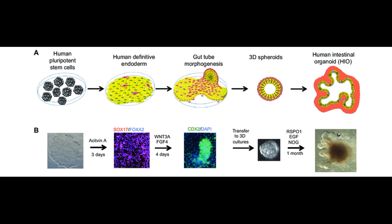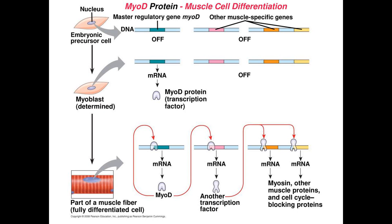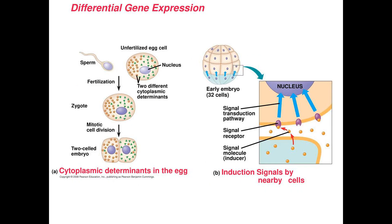This includes the processes that shape the organism, which is called morphogenesis. But how do the cells know what to do to take the right shape? One example of gene regulation determining cell differentiation is the differentiation of muscle cells. This is controlled by one master regulatory gene, which codes for a transcription factor that turns on the other genes specific for muscle cells.